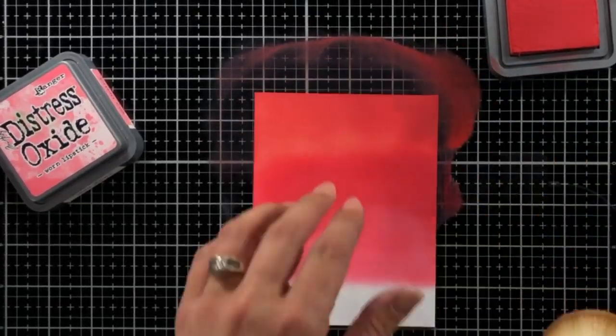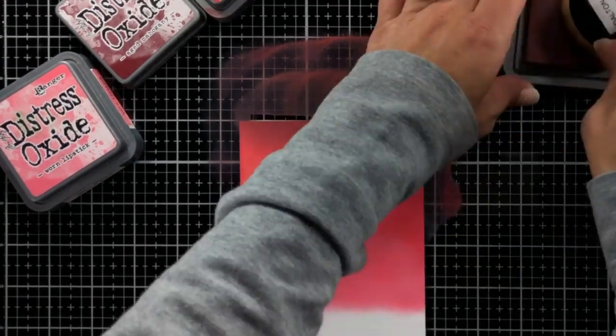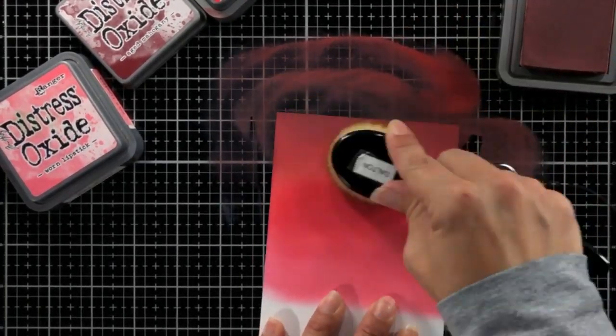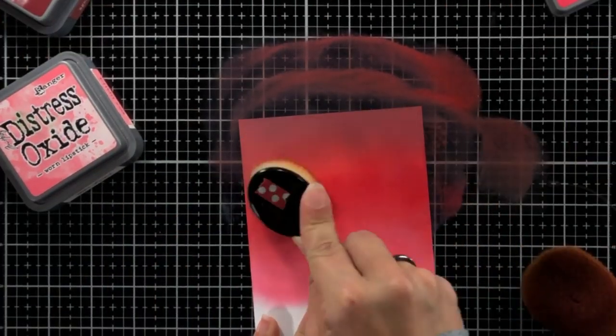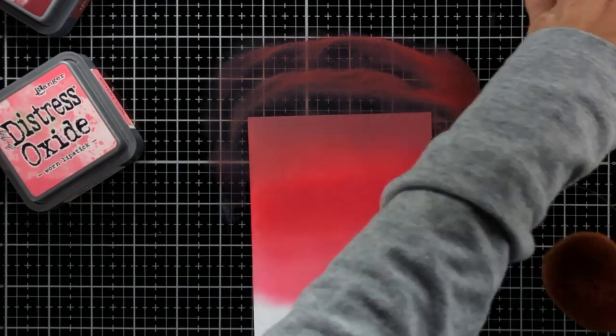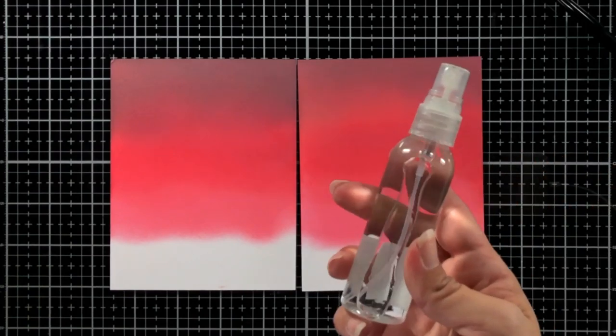You can totally do the blues for the background which is typically what I would do for the nighttime sky. I just thought red was a really nice change up for my background. I like to kind of keep things interesting on my cards. Then I can just go back and forth over my colors with my life-changing blender brushes to even out that transition.